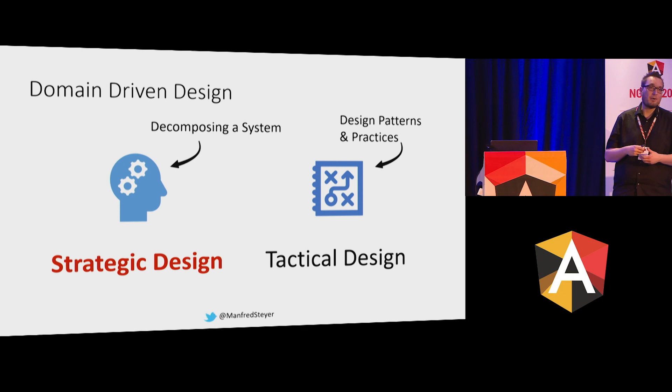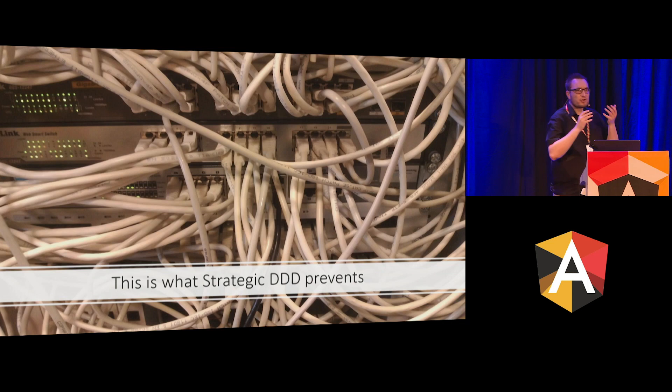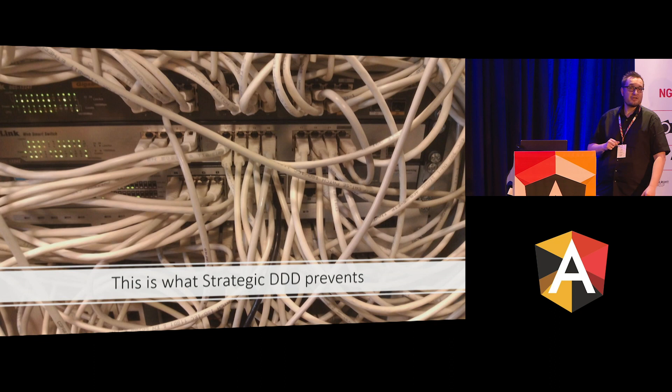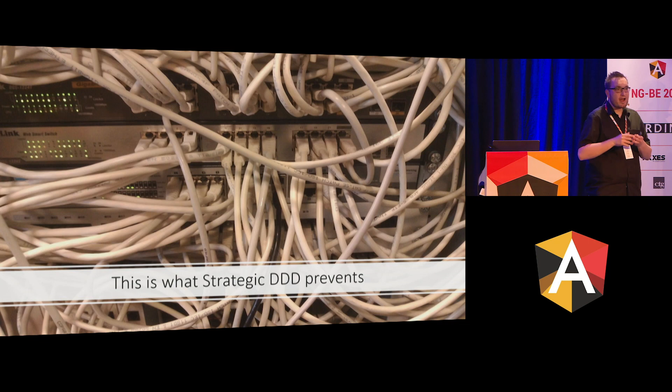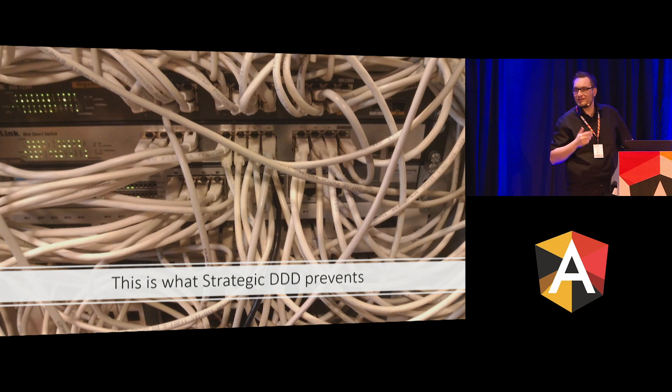Strategic design is about decomposing a big system into tiny, sustainable, maintainable parts. Tactical design, however, is about design patterns and best practices. Put another way: strategic design is more about architecture, and tactical design is more about program design. For this reason I will stick here with strategic design. And if I had just one slide to explain it, I would say: strategic design is preventing a system where everything is intermingled with everything else.